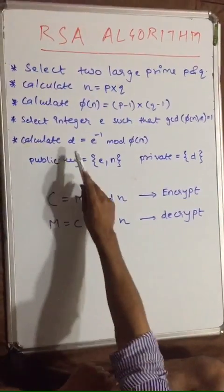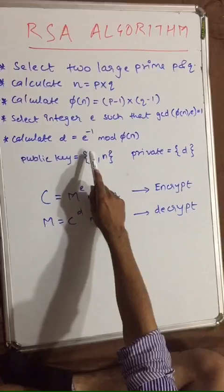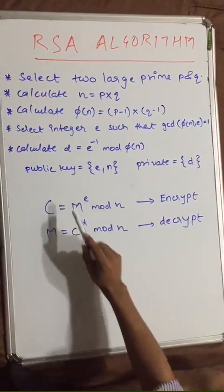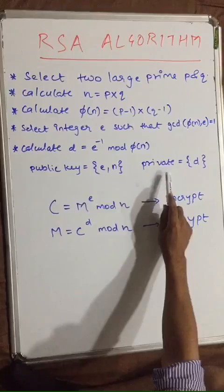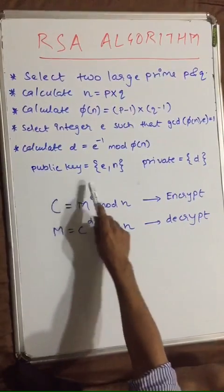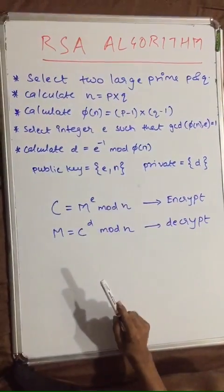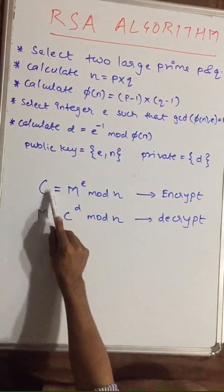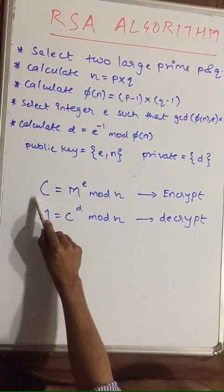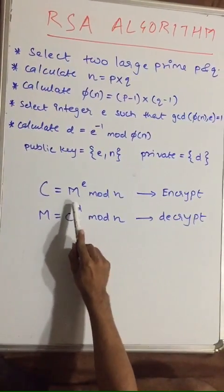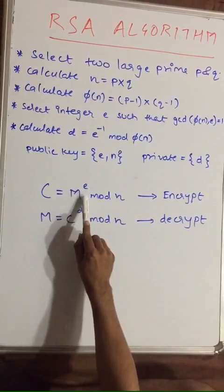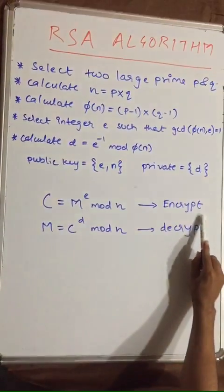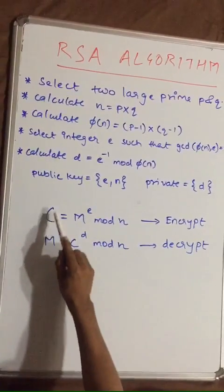Now calculate d. Its formula is d equals e inverse mod phi(n). So d is our private key, and the public key is e and n. Now c, our ciphertext, is equal to message raised to e mod n. This is called encryption — we convert the message into ciphertext.